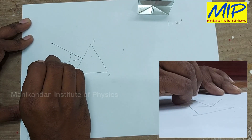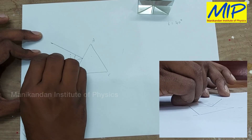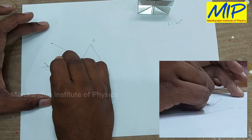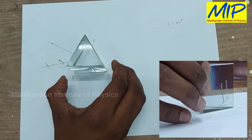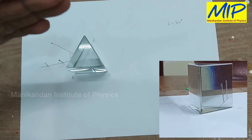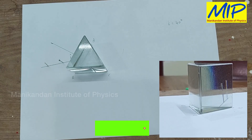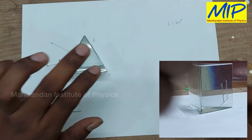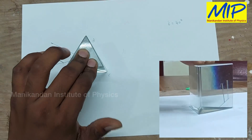Now I am going to place two bell pins on this incident ray line. Because of the prism placed here, the image of these bell pins is refracted in the other direction. We look at the other side of the prism where the refraction of the bell pins appears, and we place two more bell pins there to mark the emergent ray direction.